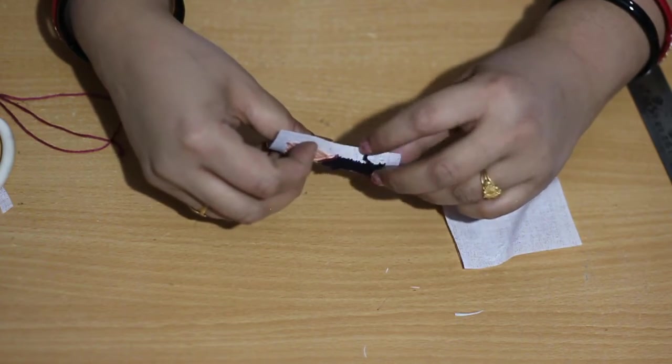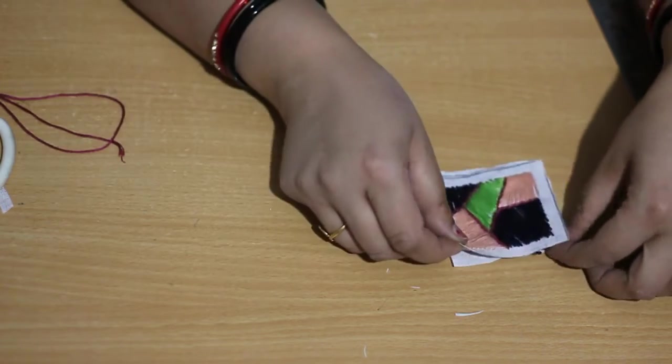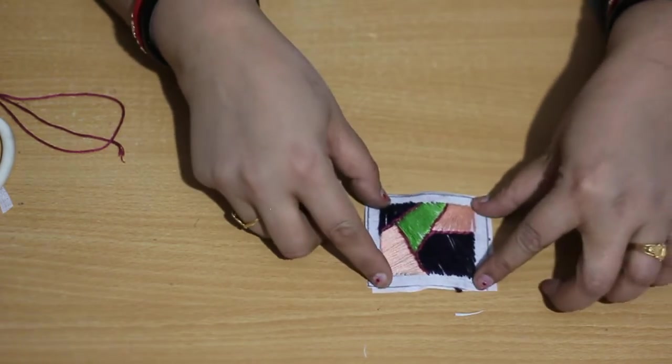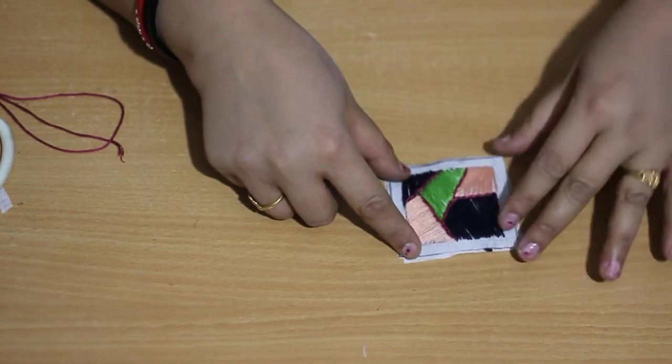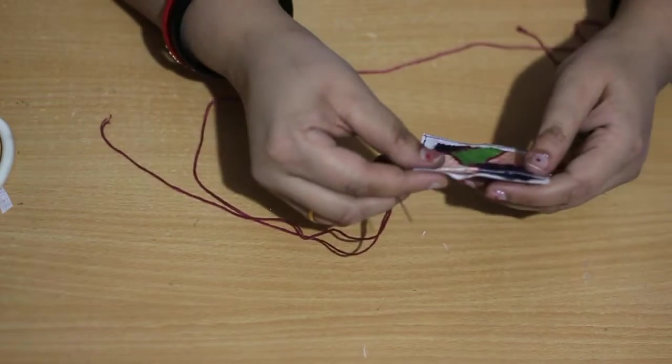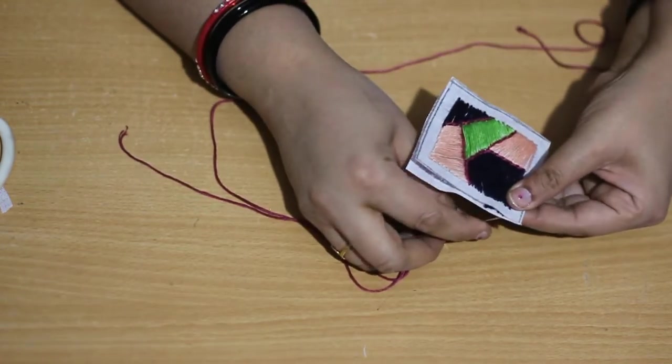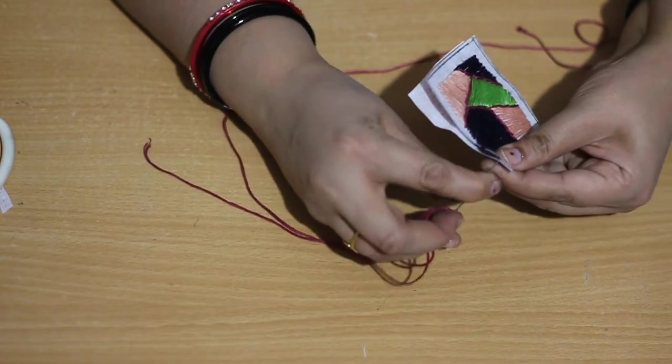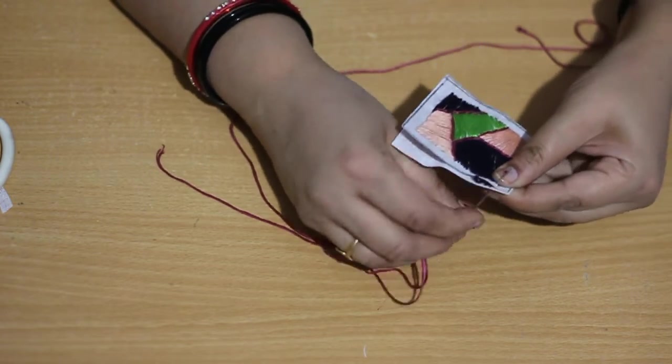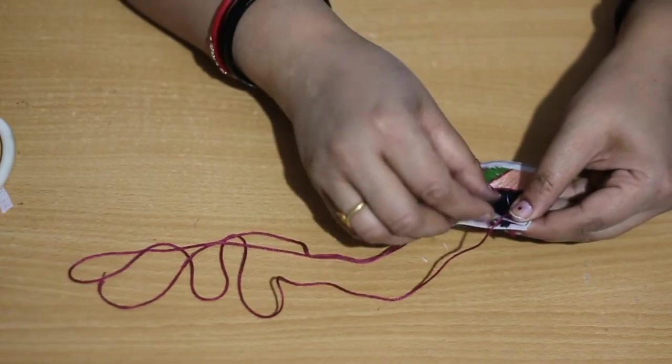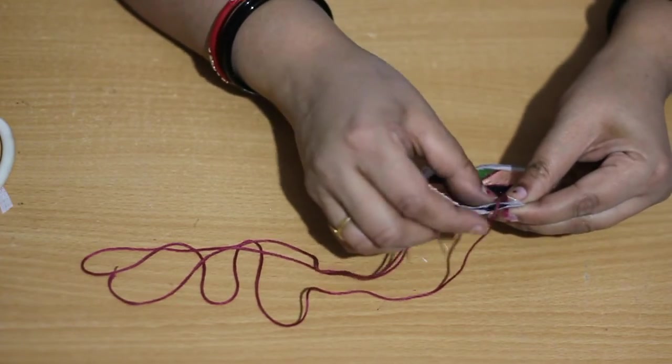Cut the fabric. Then we have to attach both the pieces together with the help of buttonhole stitch. The buttonhole stitch will be done at the borderline, the white line, the extra fabric which we have left around the design. Join both the pieces together with buttonhole stitch.